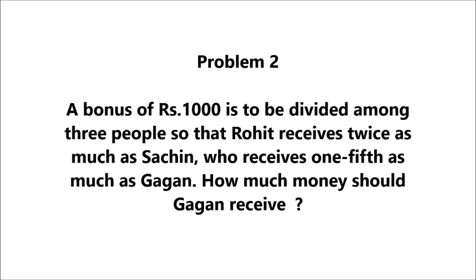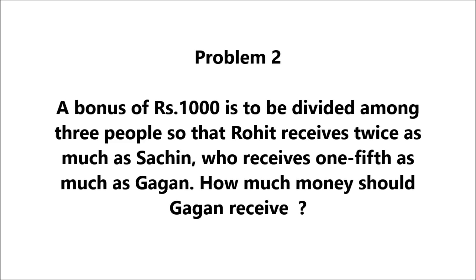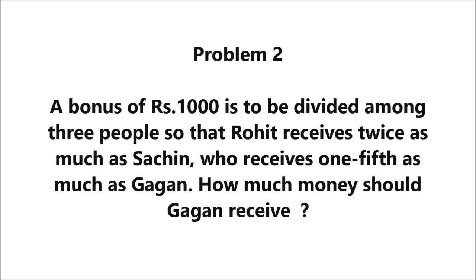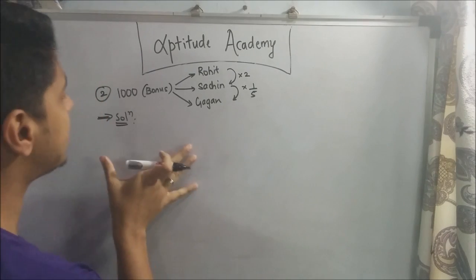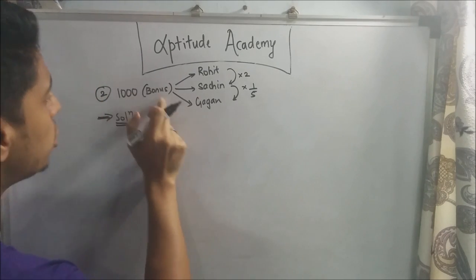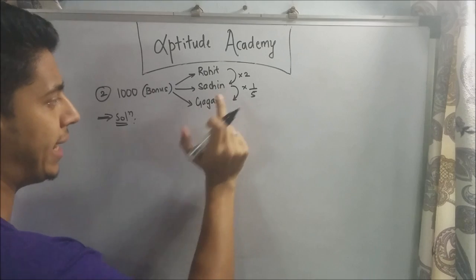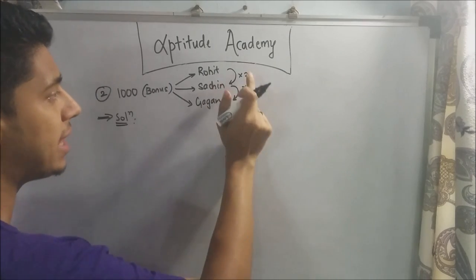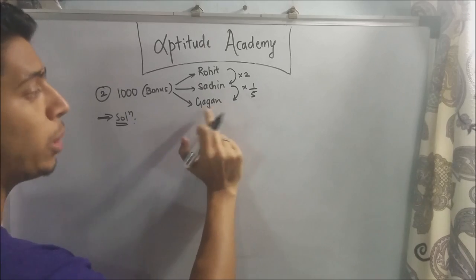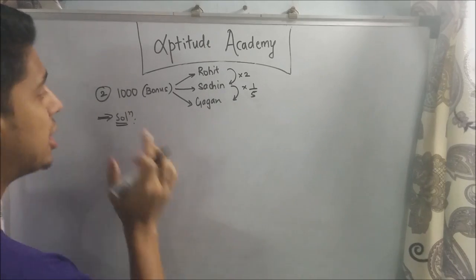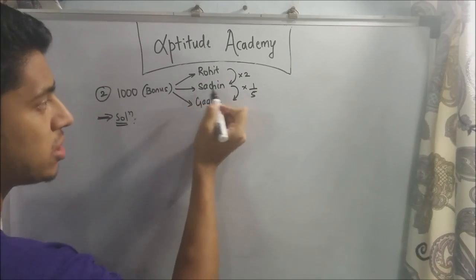Problem 2: A bonus of rupees 1,000 is to be divided among three people so that Rohit receives twice as much as Sachin, who receives one-fifth as much as Gagan. How much money should Gagan receive? The bonus of 1,000 is divided amongst Rohit, Sachin, and Gagan, such that Rohit gets twice as much as Sachin and Sachin gets one-fifth of what Gagan gets.